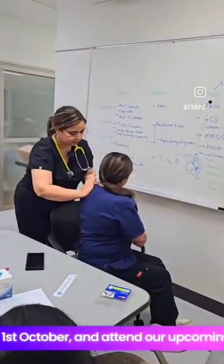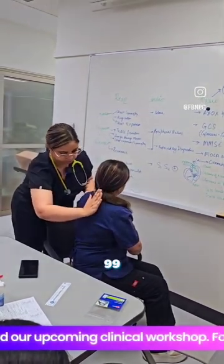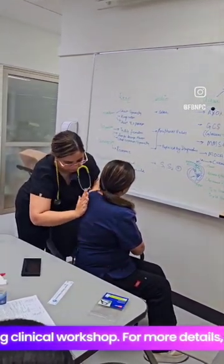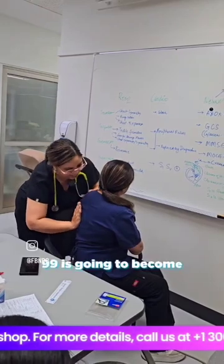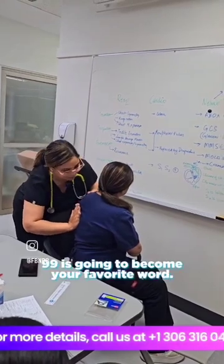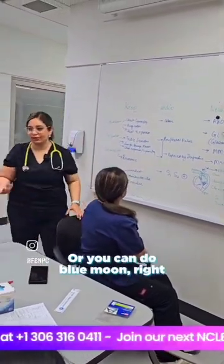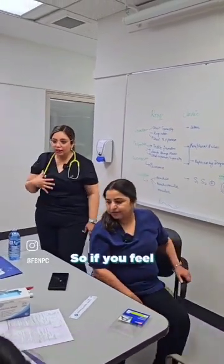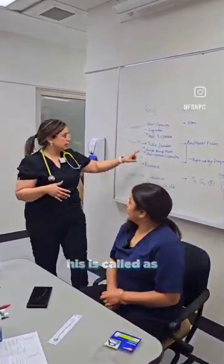Similarly, we do it on the posterior side. So say '99' — 99 is going to become your favorite word — or you can say 'blue moon.' If you feel the vibration, this is called tactile fremitus, and that's positive.